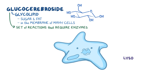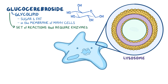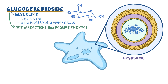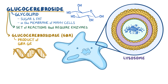Macrophages contain lysosomes, which are organelles that act as the cell's digestive center. Inside lysosomes, large, potentially harmful substances are broken down to be either discharged or reused by the body. One example is glucocerebroside, which is broken down by the enzyme glucocerebrosidase, or GBA, which is a product of the GBA gene.